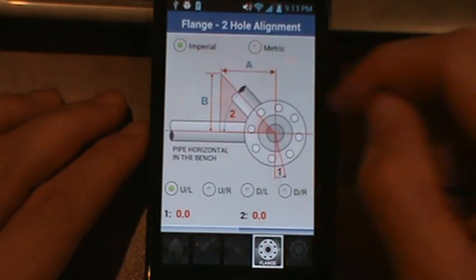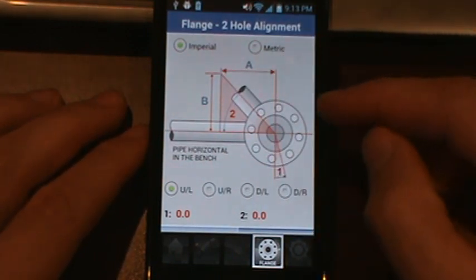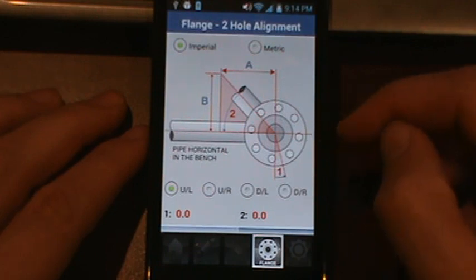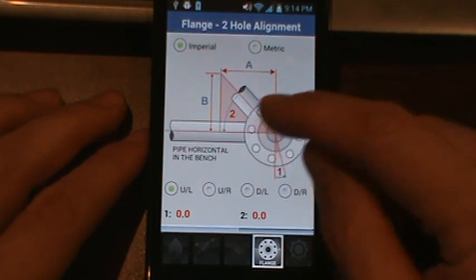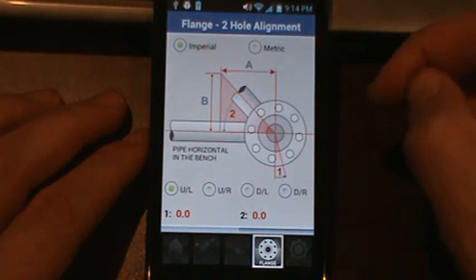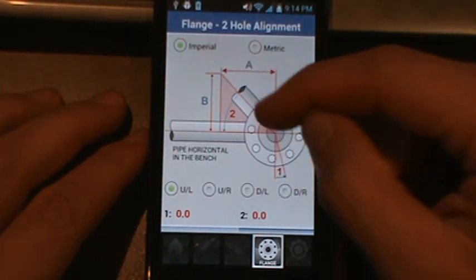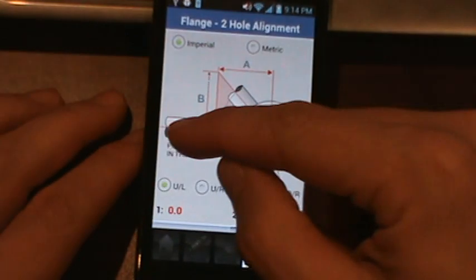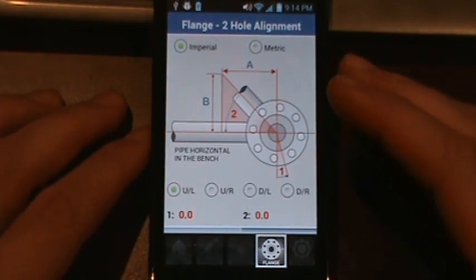You see at the top you have the option of imperial and metric. And then you'll see below that is the image of a flange. You'll see the pipe rising up at an angle that is what's visible in the field. This is your horizontal run that you would find in the bench.